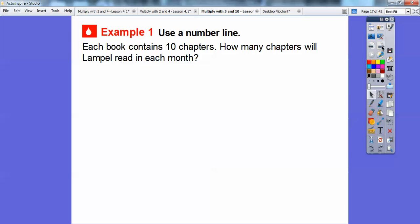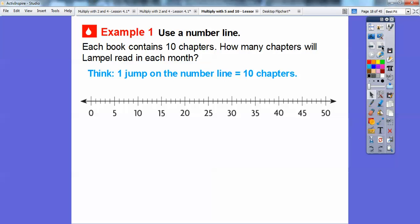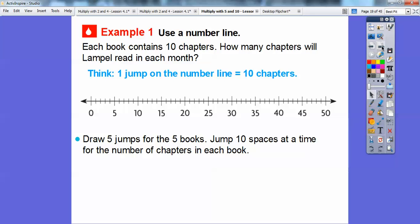Each book, and we're going to use a number line this time. Each book contains ten chapters. How many chapters will Lampelle read in a month? Remember, she reads five books in a month. This one's going to be five times ten. We're going to, one jump on the number line is going to equal ten chapters. We're going to jump five times because Lampelle is going to read five books in a month. We're going to draw the five jumps for the five books, and then ten of the spaces at a time are going to represent the number of chapters right here.